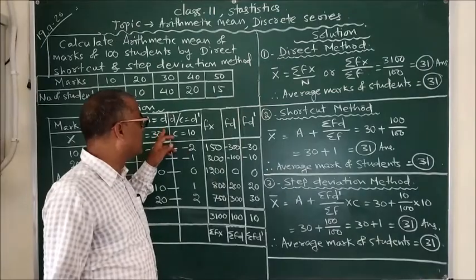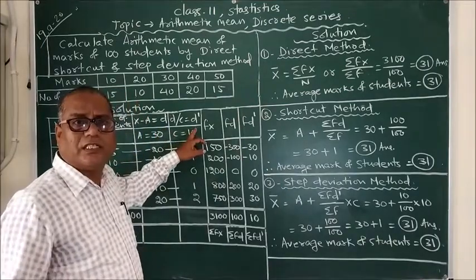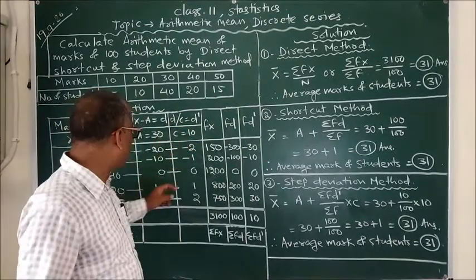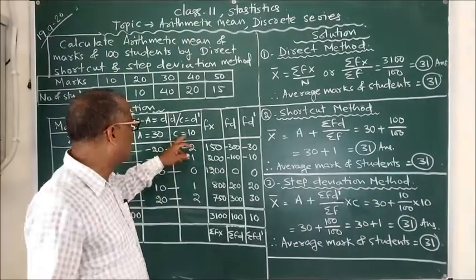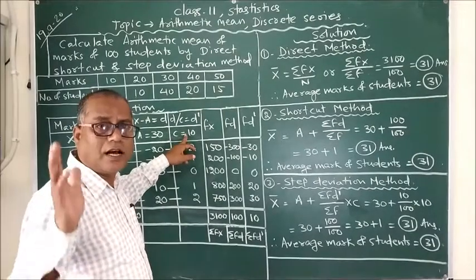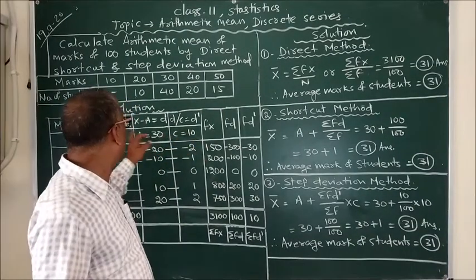We need d dash that is deviation by common factor, and because all the values are divisible by the number 10, we have taken the common factor as 10.